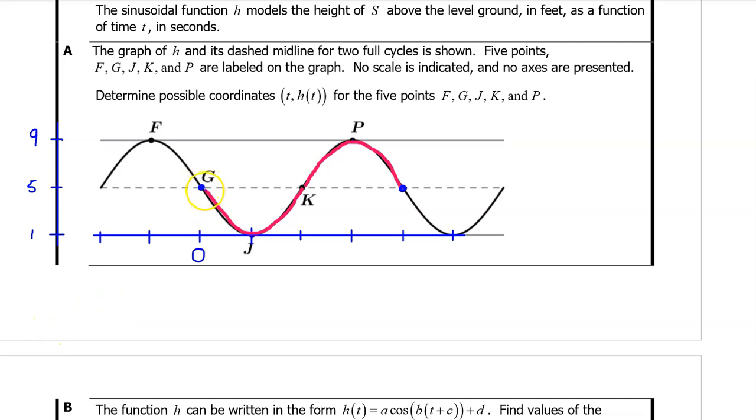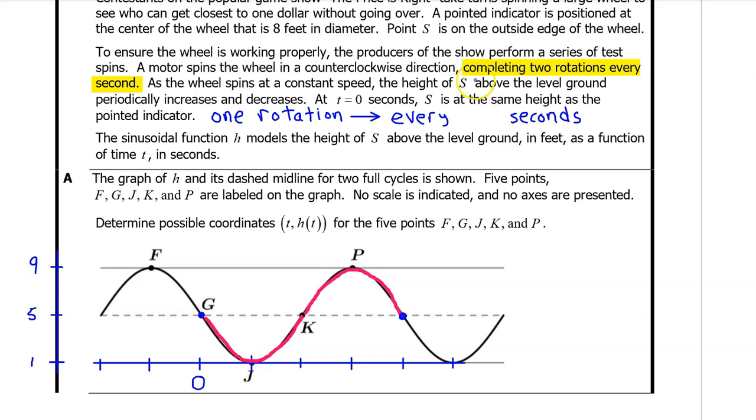Starting at time t equals zero, I've highlighted one period of the function. If we can figure out the duration of the period, we will know the input value at the end of the cycle. In the setup, we were told that the wheel completes two rotations every second. But a period is one rotation. If the wheel completes two rotations in one second, then it will complete one rotation every half of a second. That's the period. P equals one half.